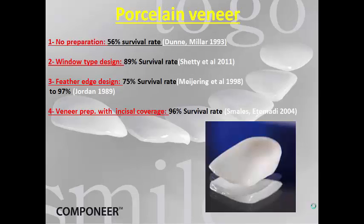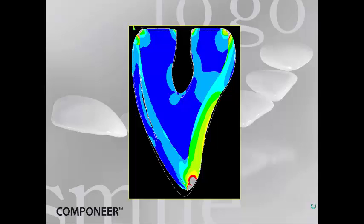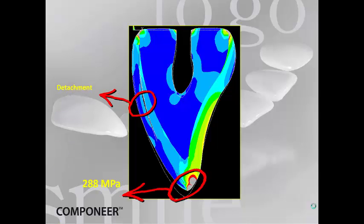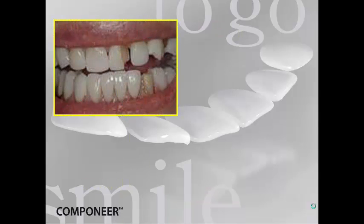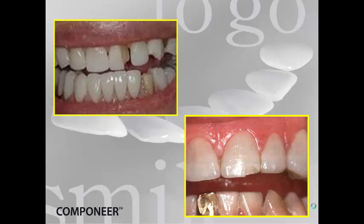The first material used for veneers was porcelain. There are many preparation types, from no preparation to window type, feather edge, and with incisal coverage. The survival rate ranges from 56% to 96%. In a finite element analysis, by exerting incisal stress, there will be detachment significant in the middle area and a lot of force in the incisal region, causing possible fracture of the veneer in different areas.